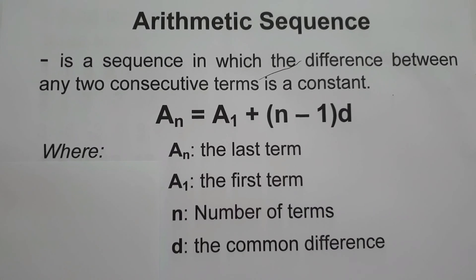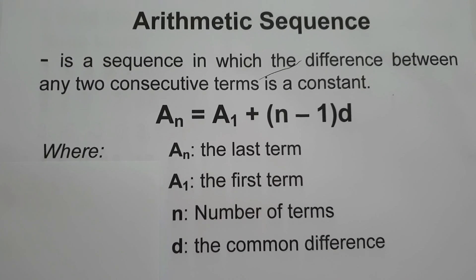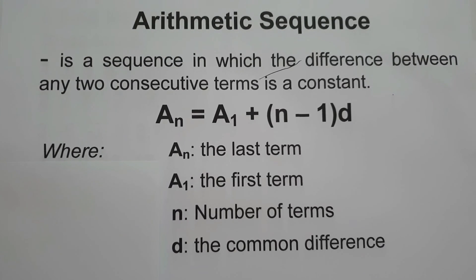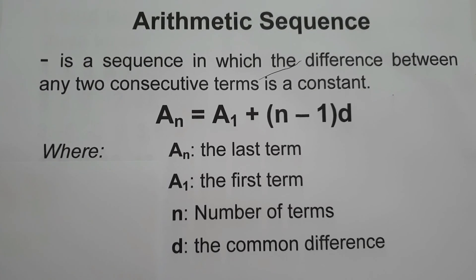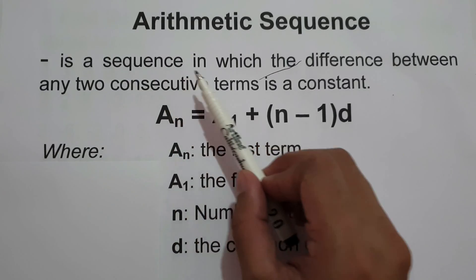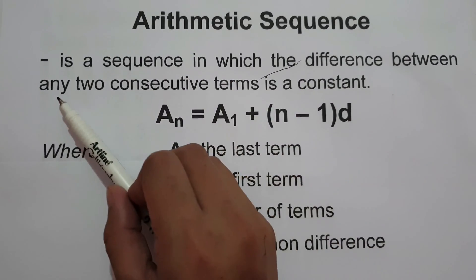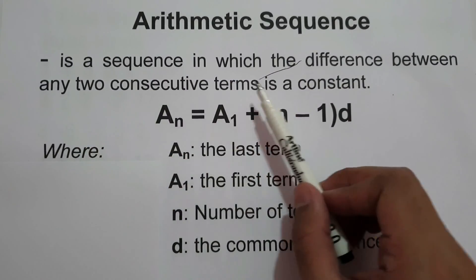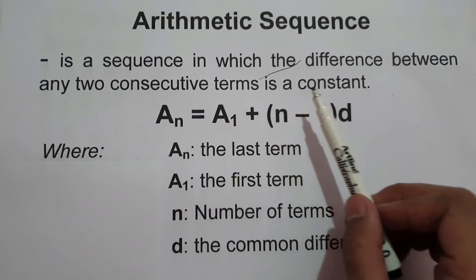For today's video, we are going to talk about what is arithmetic sequence and we are going to find out how to find the nth term of the given sequence. First, let's define what is arithmetic sequence. Arithmetic sequence is a sequence in which the difference between any two consecutive terms is a constant.